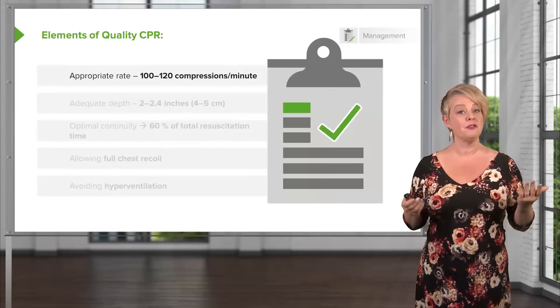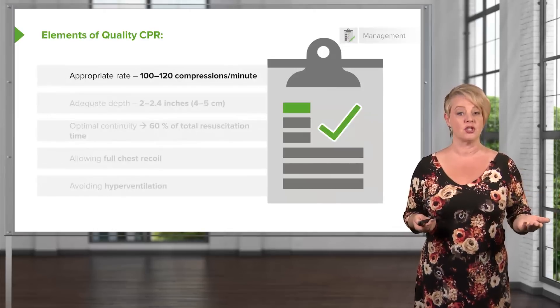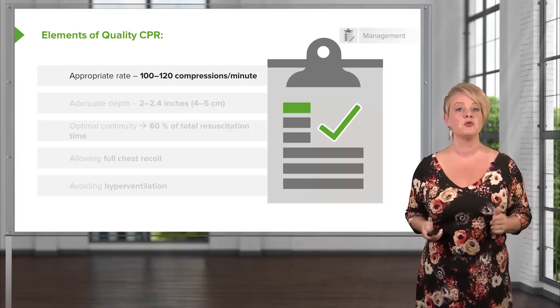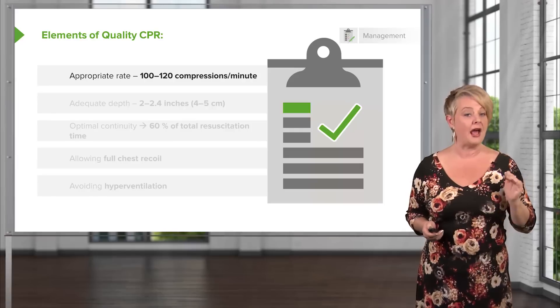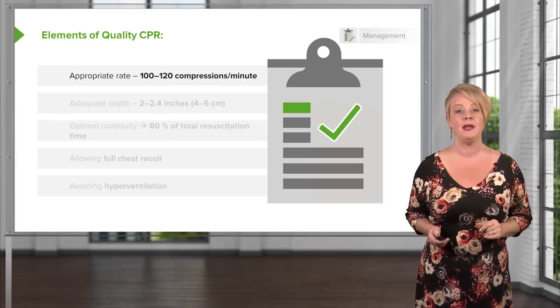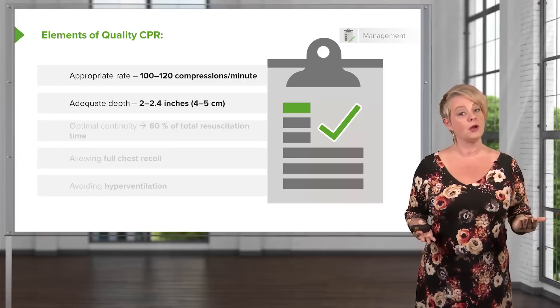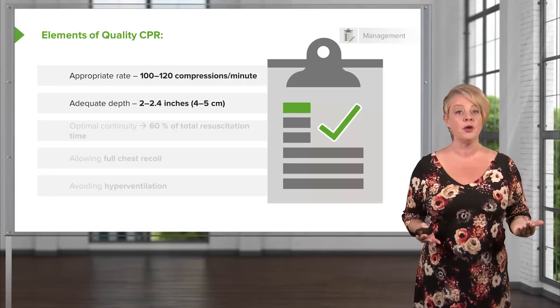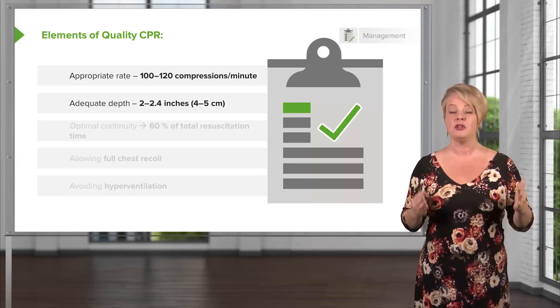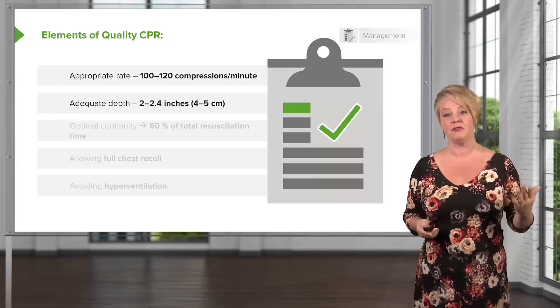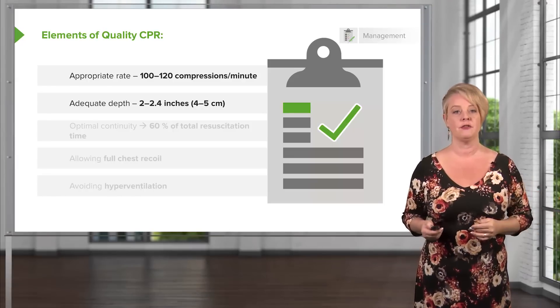The first determinant is the rate of compressions — 100 to 120 is the rate that every rescuer should be aiming for. The second is adequate compression depth: we want to go about two to two and a half inches, or four to five centimeters.